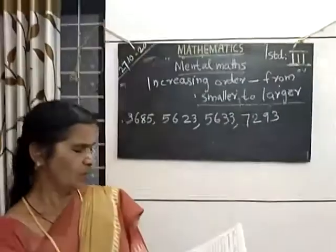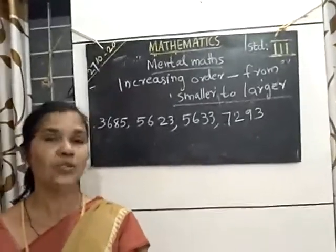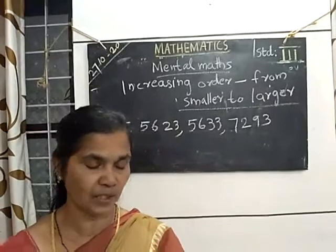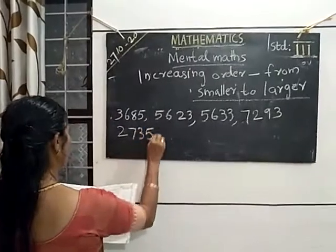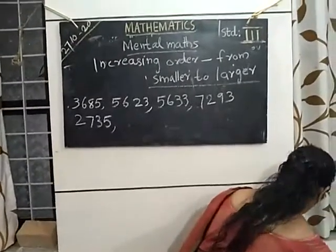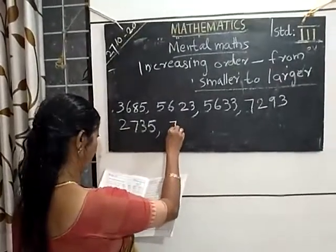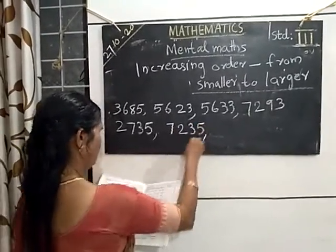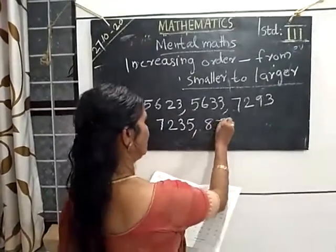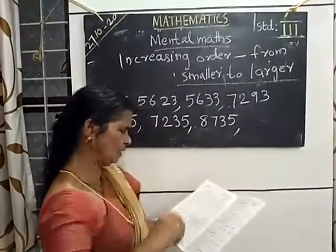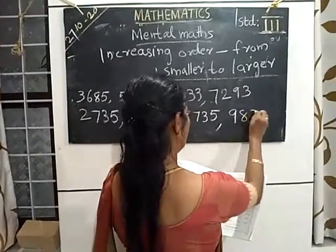Next number. You look at the four numbers — find out the smallest digit in thousands. Which is that? 2,000. You start with that number: 2,735. Next number: 7,000 — start with 7,235. Then 8,000 — 8,735. Which is the largest number? 9,835.